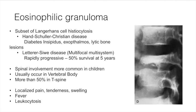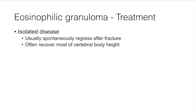Eosinophilic granulomas are common in children and are a subset of Langerhans cell histiocytosis. Related conditions include Hans-Schüller-Christian disease — a constellation of diabetes insipidus, exophthalmos, and lytic bone lesions — and multifocal multisystem Letterer-Siwe disease, which has a more rapidly progressive nature. These occur most commonly in the thoracic spine in kids and can present with systemic symptoms raising concern for infection, but they usually have a benign course.